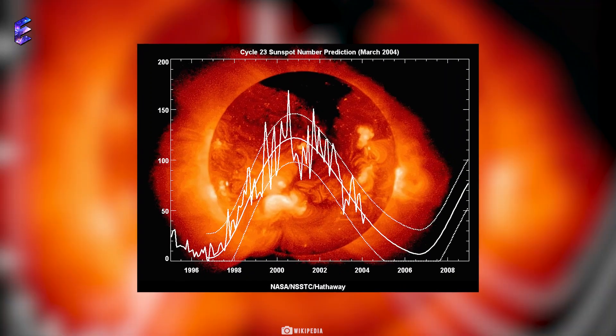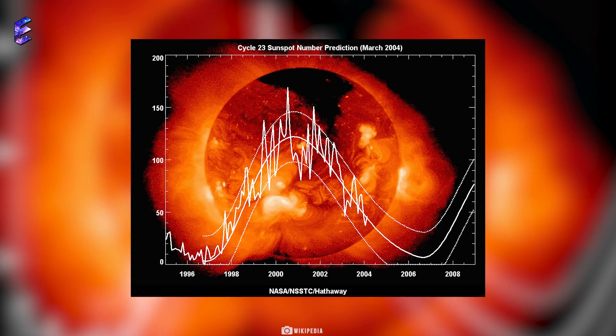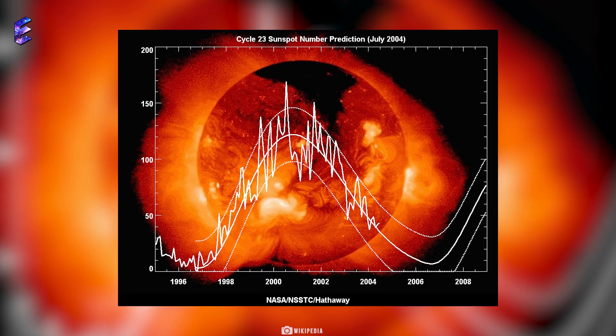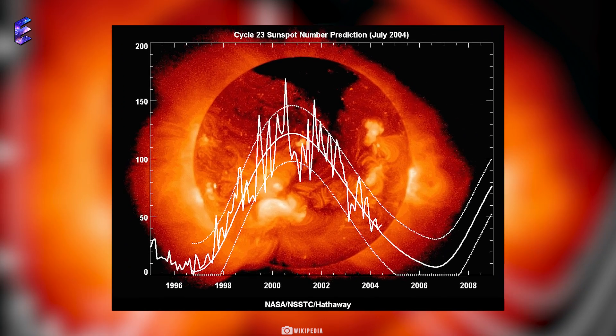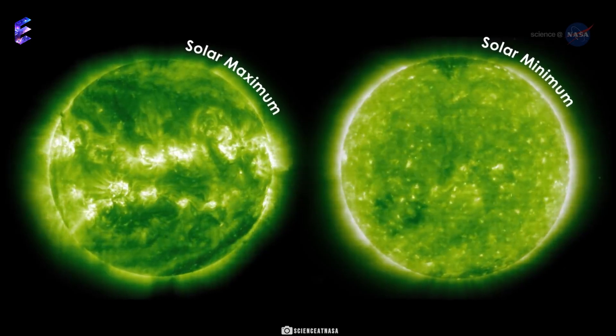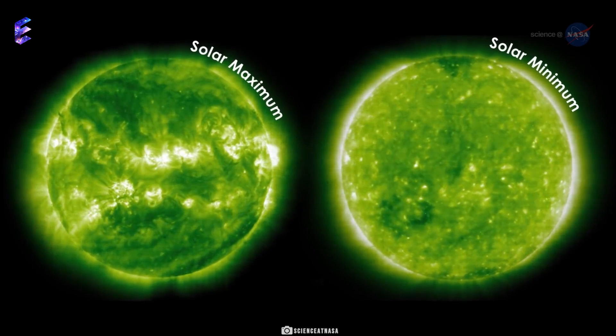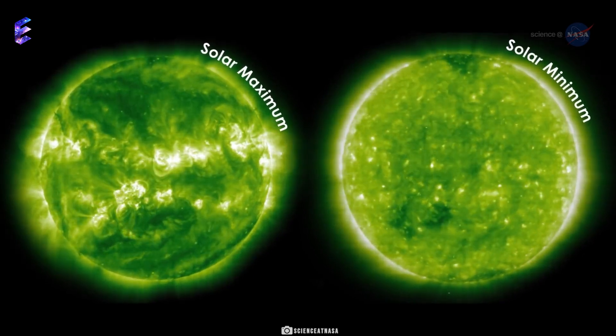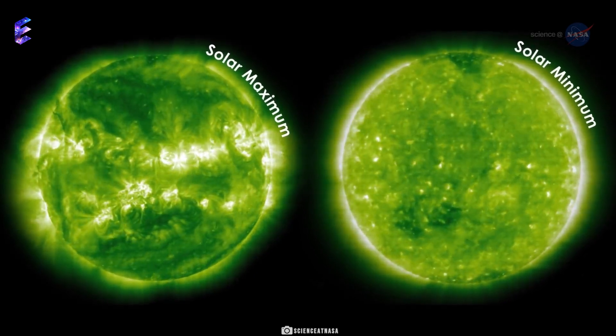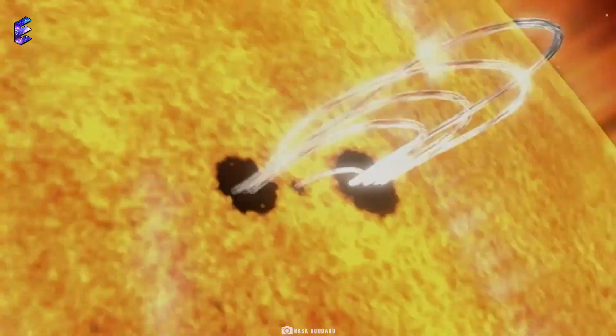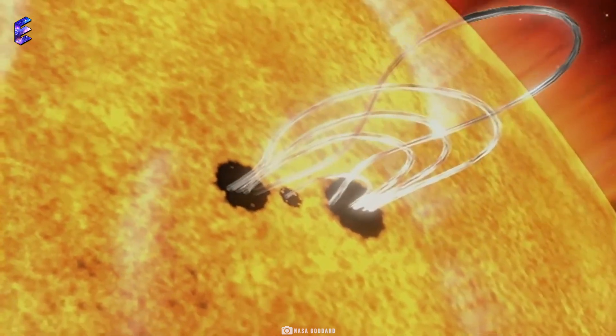But the last time the Sun was very active, it left a satellite dead. This was in solar cycle 23, which peaked in 2003 — that's how powerful a solar maximum can be. But this solar maximum doesn't look as frail as the last one, as the Sun has already begun producing more striking solar flares than in the last solar maximum.